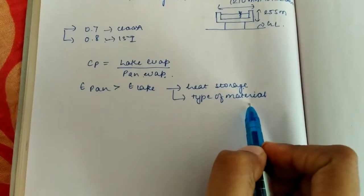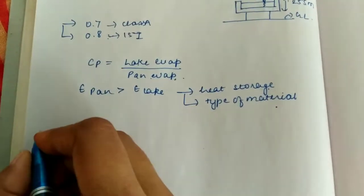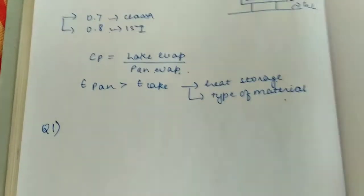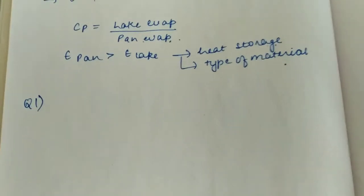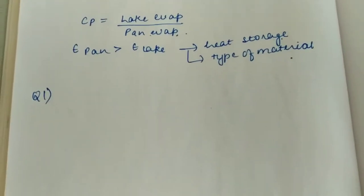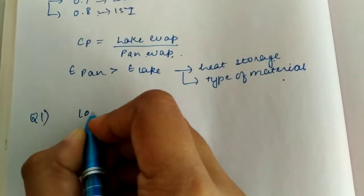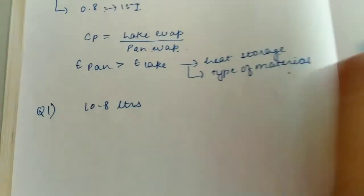type of material we have. So quickly I'll go to the numerical portion. Some numericals I'll show you here which we have already discussed in class. The question is: during a daily routine observation, 10.8 liters of water is